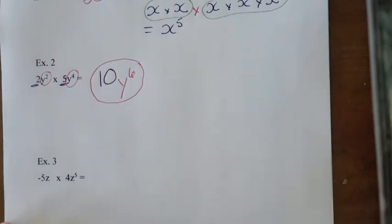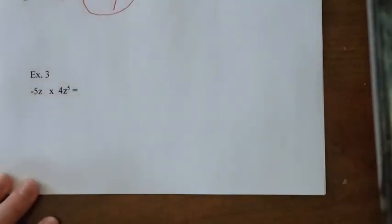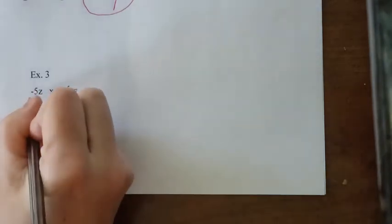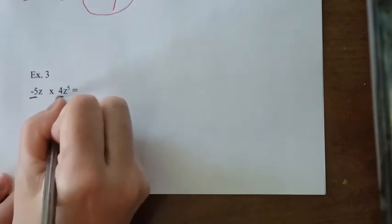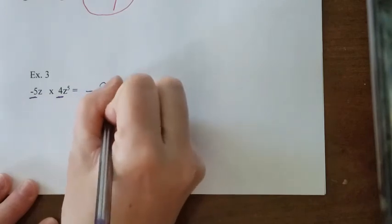I have one last example to do. So my last example here, it's a little different. I have a negative out in front, but that doesn't make any difference. So if I had negative 5 times positive 4, well, that gives me negative 20.